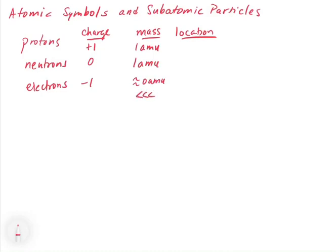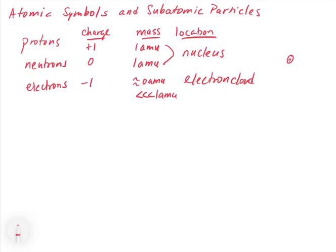Electrons do have some mass, but it's much less than 1 AMU, so for the functional purposes of chemistry they don't contribute to the overall mass of the atom. In terms of location, protons and neutrons are both located in what we call the nucleus, and the electrons are in what we call the electron cloud — the orbitals that surround that nucleus. You get a picture of a positive nucleus with protons and neutrons, surrounded by electrons orbiting in the electron clouds. This nuclear model of the atom took many years and many experiments to develop.